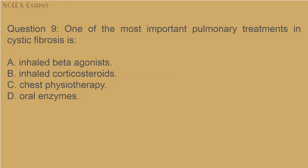Question 9: One of the most important pulmonary treatments in cystic fibrosis is: A) inhaled beta agonists; B) inhaled corticosteroids; C) chest physiotherapy; D) oral enzymes.